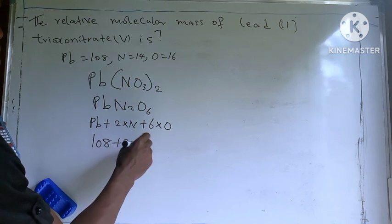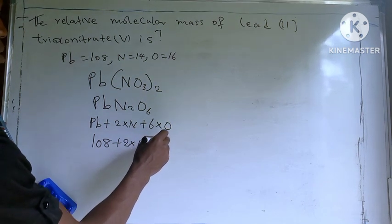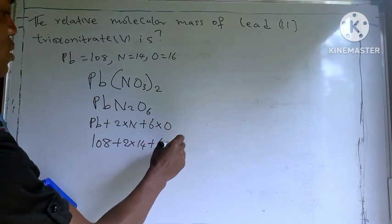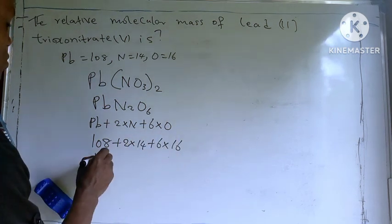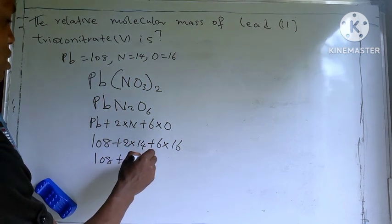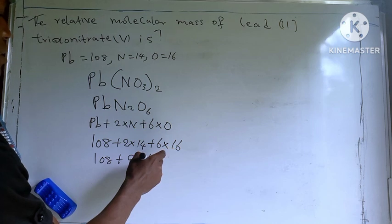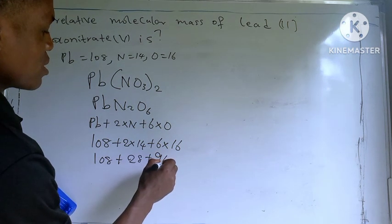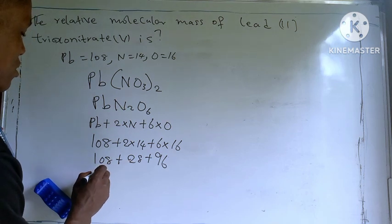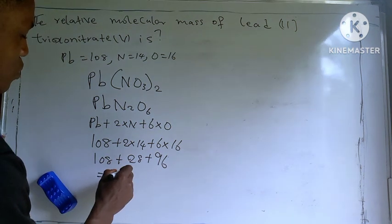Plus 6 oxygen is given as 16. So 108 plus 2 times 14 equals 28, plus 6 times 16 equals 96. So 108 plus 28 plus 96 equal to 232.